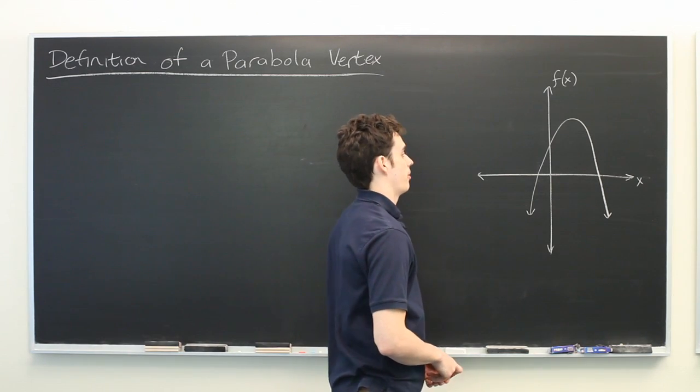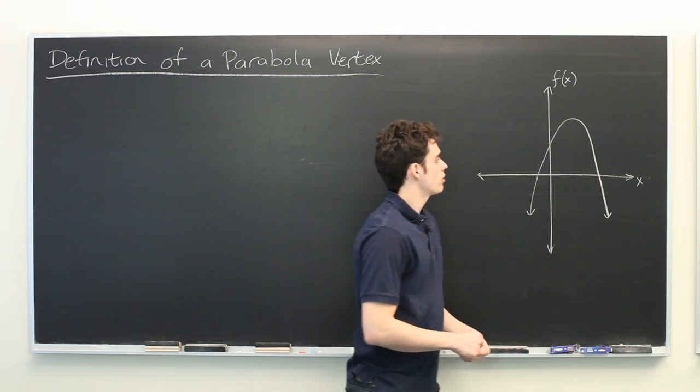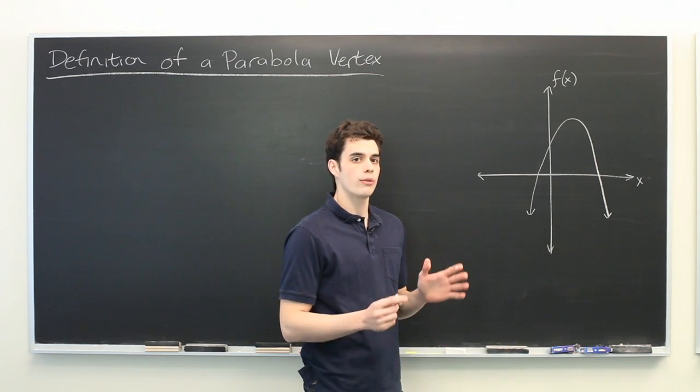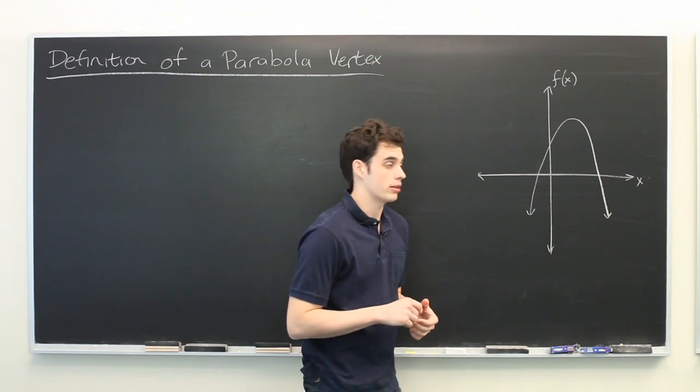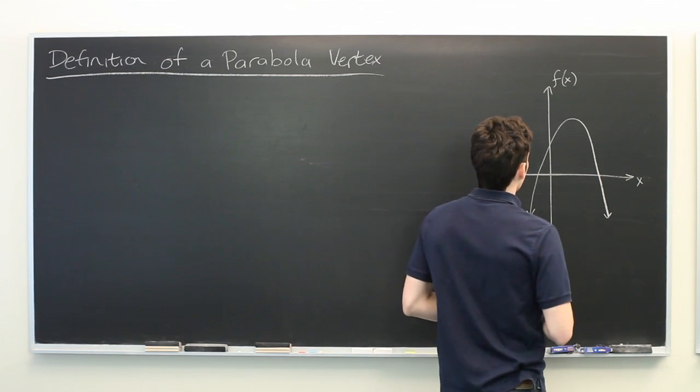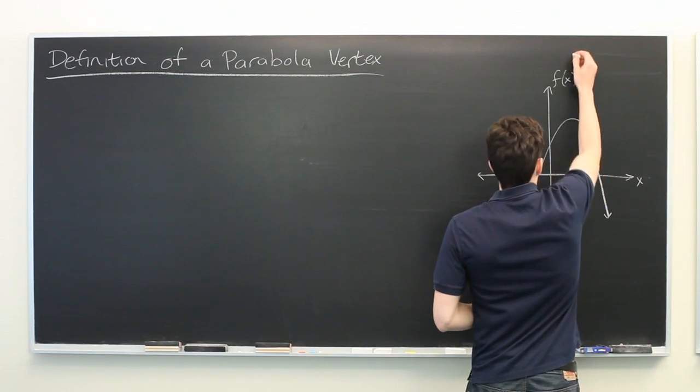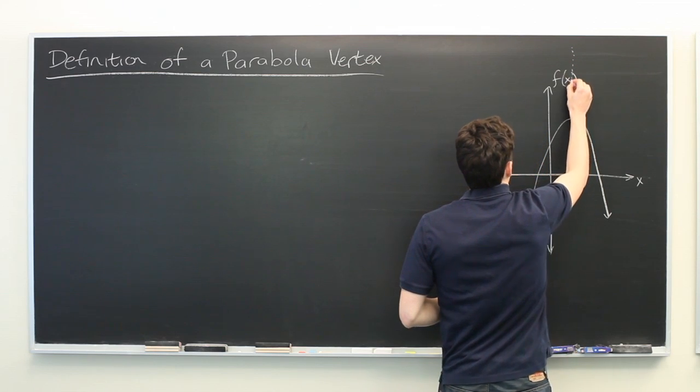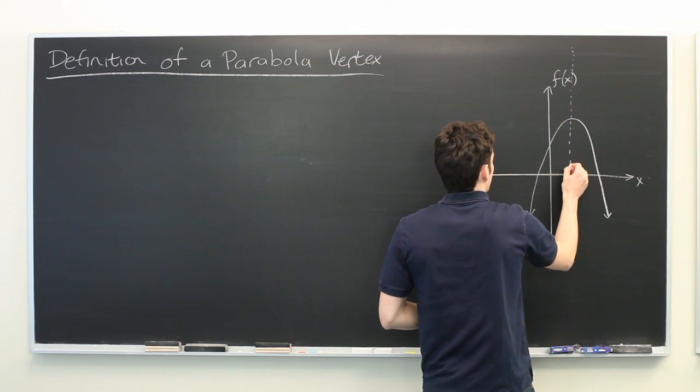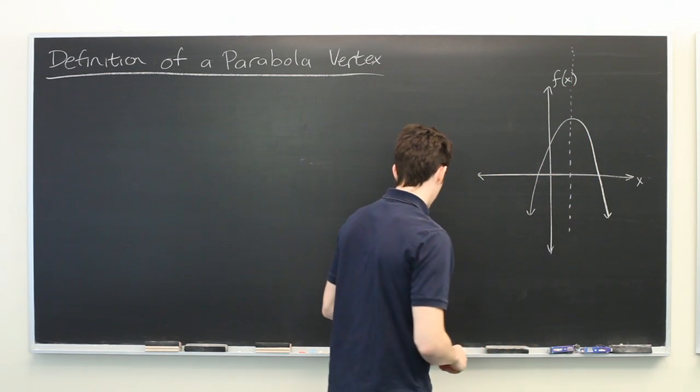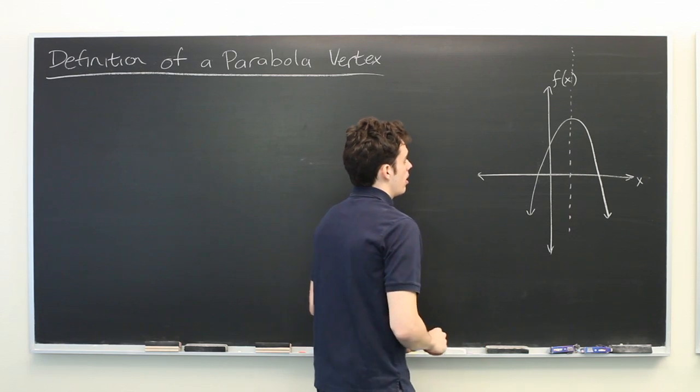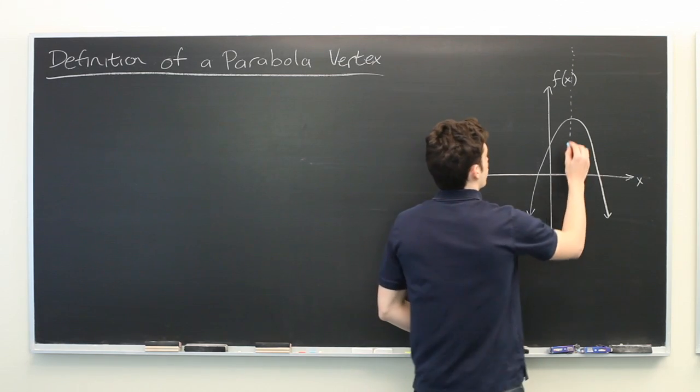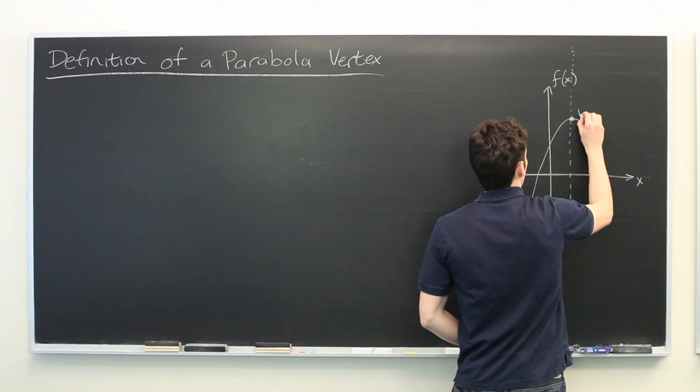So here we have an example parabola. And with a parabola like this there are two different ways that we can think about what the vertex means. One is to note that a parabola has an axis of symmetry that runs vertically. And that axis of symmetry runs through the vertex, which we will label here.